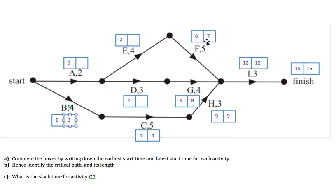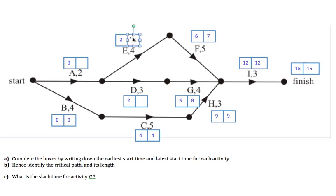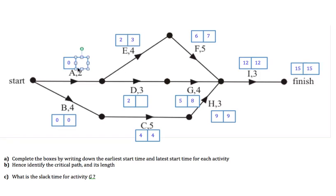Going along the top path, we have the latest start time for F, so we go back to E. E needs to finish so that F can start no later than 7. E takes 4 to complete, so the latest possible time for E to start would be 3, because 3 plus 4 still allows F to start at 7. Now for Activity A, we need to work out the latest start times for both D and E before we can determine A's value.